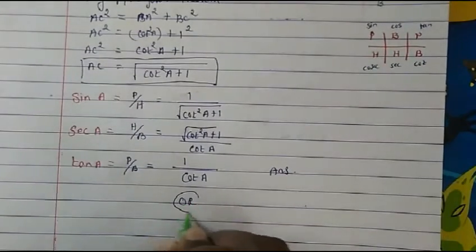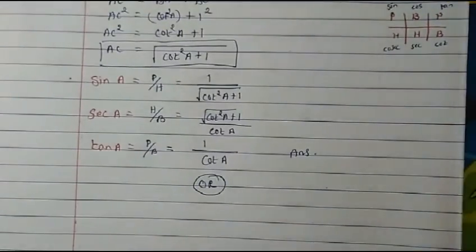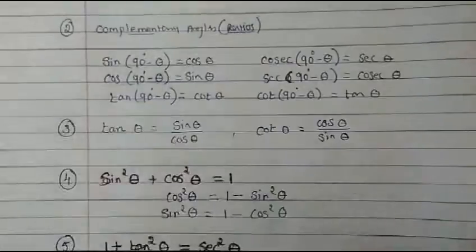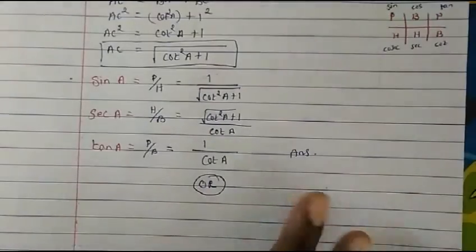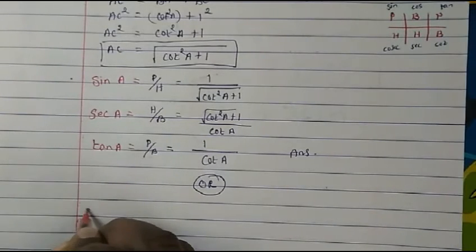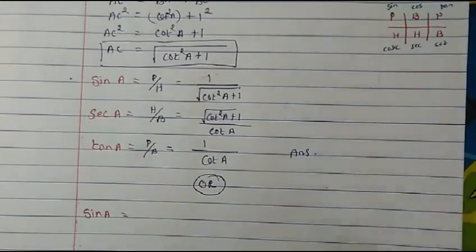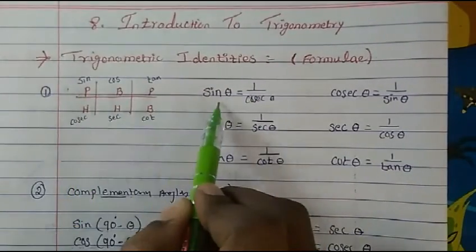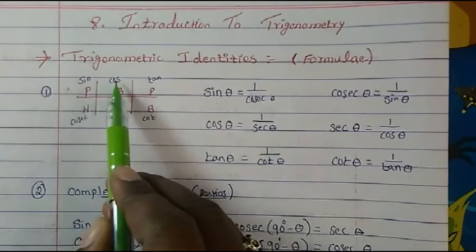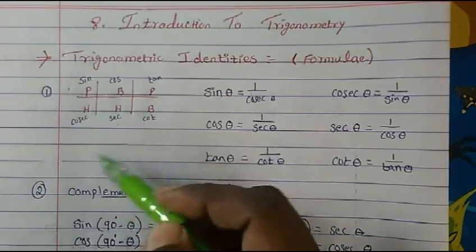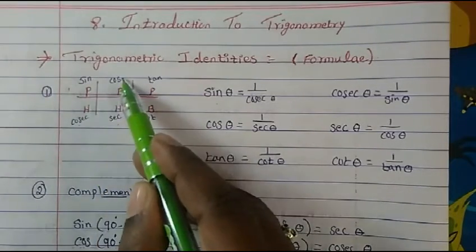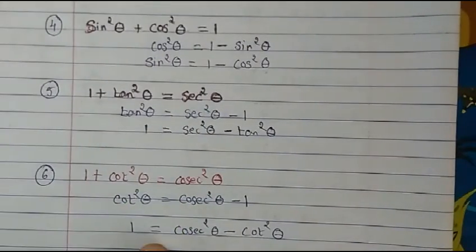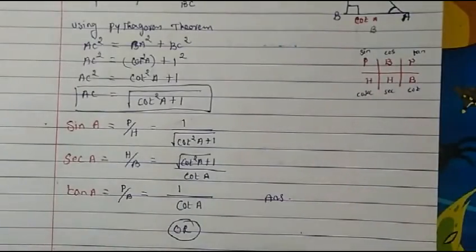This second method needs a lot of practice because we have to use trigonometric identities. I have explained trigonometric identities to you, so we have to remember all of them. Sine is inverse of cosec, cosine can be written as 1 upon sec, tan can be written as 1 upon cot, and similarly cosec is 1 upon sin, sec is 1 upon cos, cot is 1 upon tan. Using these identities, you can solve this problem too.